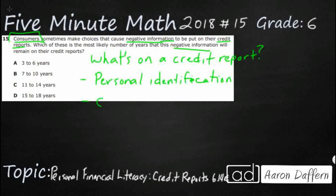Now, the biggest thing that's going to be on there is going to be your credit account information. We have credit accounts everywhere. It could be if you own a home, then it would be with your bank that has the mortgage. Every credit card you have, checking account, credit account, student loans, even car loans — loans and credit cards — it's just going to have them all listed. It's going to show how many credit accounts you have, the date they were opened, the account balances, payment history, whether you've kept up with all your payments. There's going to be a lot of information, including credit limits.